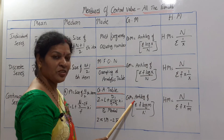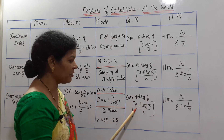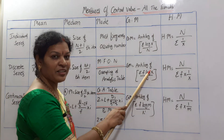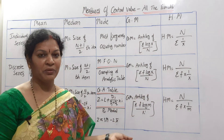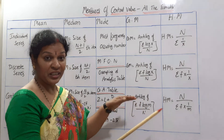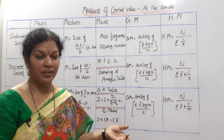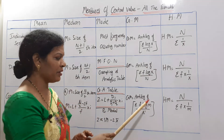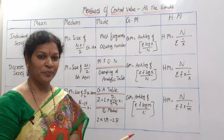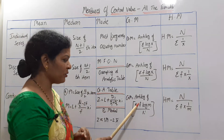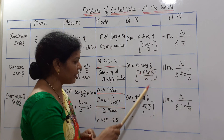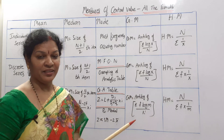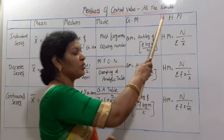For continuous series, geometric mean = antilog of (Σ f·log m / n). Here x cannot be taken directly, so we calculate the mid value m for each class interval, take log m, prepare a table of f·log m, and use that. So instead of x, we write m — giving the formula antilog of (Σ f·log m / n).